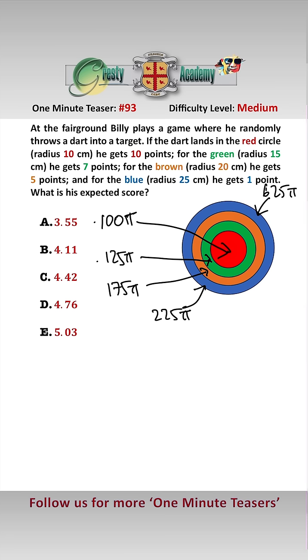So now the expected score depends on the areas of the colours and how many points you get for each colour. So the expected score E equals 100 pi, that's if he hits the red, over 625 pi times 10 points. Add 125 pi, that's if he hits the green, over 625 pi times 7 points.